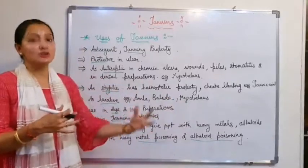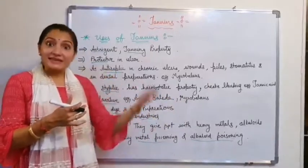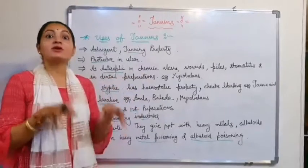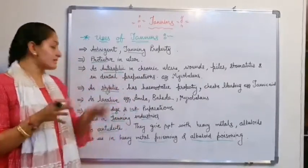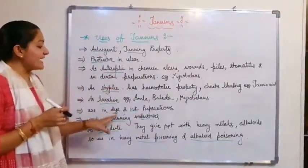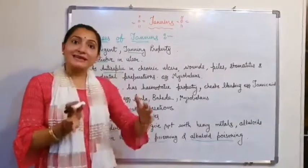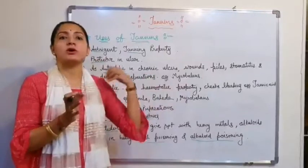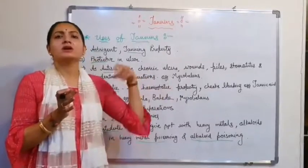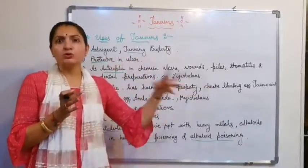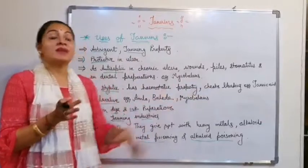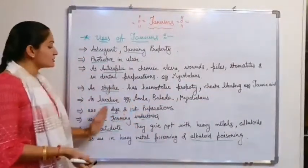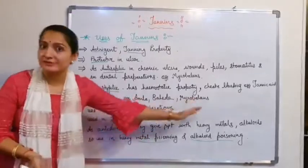Their powders are taken by people who have GIT problems or constipation, so they are used as laxatives. Sixth use is in dye preparation. Tannins with many chemicals produce different colors — orange, red, brown, yellow, blue — so they are used to produce many ink colors and are used in the dye and ink preparations industry.